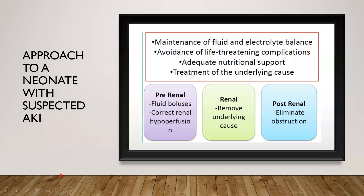Maintenance of fluid and electrolyte balance is very important. Adequate nutrition is also critical: for newborns with AKI, we want a calorie intake of around 100 kcal per day. Breast milk is the best option. If formula is needed, a special low-solute formula known as Similac PM 60/40 is available. Human milk fortifier should be avoided because of its high phosphate load. If the baby is on TPN, one should avoid too much protein — a maximum of 1.5 g/kg is appropriate. For babies on dialysis, up to 3 g/kg can be given.